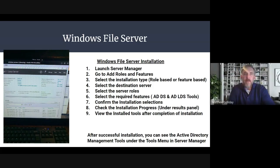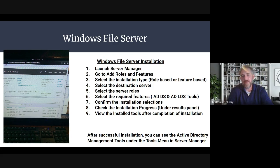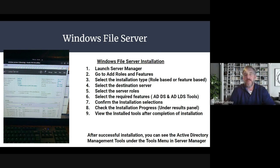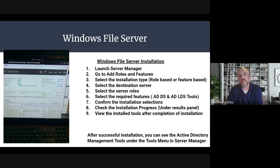I'll be going over how to set up Windows File Server. First, you're going to go to Launch Server Manager, then go to Add Roles and Features. Select the installation type, which will be role-based or feature-based. Then select your destination server, then select the server roles. Select the required features as ADDS and ADLDS tools. Confirm the installation selections, check the installation progress under the results panel, and then view the installed tools after completion of installation. After successful installation, you can see the Active Directory Management tools under the Tools menu in Server Manager.